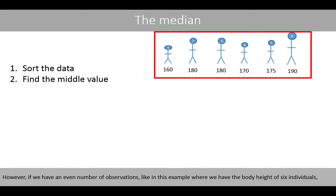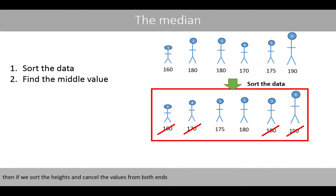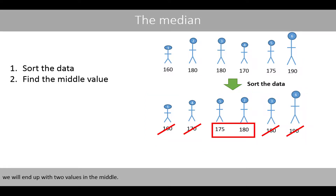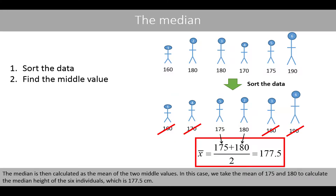However, if we have an even number of observations, like in this example where we have the body height of six individuals, then if we sort the heights and cancel the values from both ends, we'll end up with two values in the middle. The median is then calculated as the mean of the two middle values. In this case, we take the mean of 175 and 180 to calculate the median height of the six individuals, which is 177.5 centimeters.